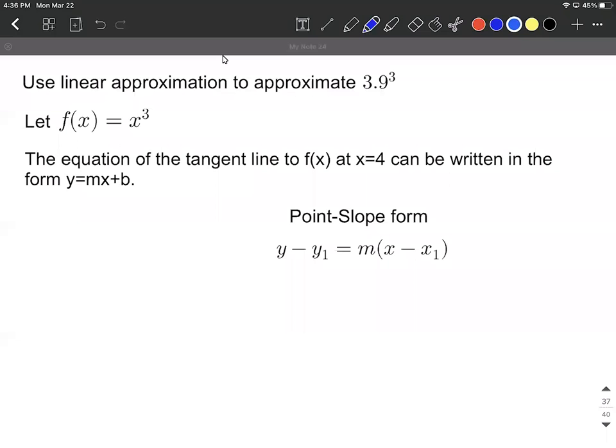The easier of these two is probably going to be finding the point that's on our line. We already have an x value so we can plug into the original function and get a y value that corresponds. So 4 cubed works out to be 64. Basically we have the ordered pair 4 comma 64. That's going to be our x1 value and our y1 value over in the formula.